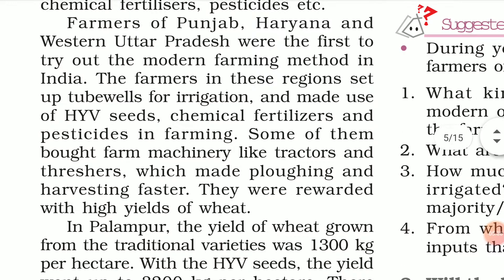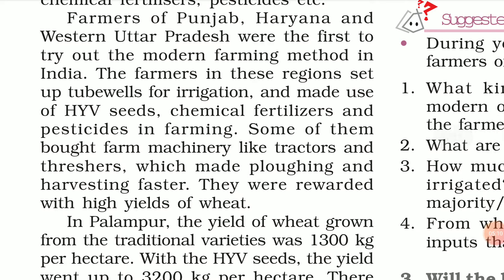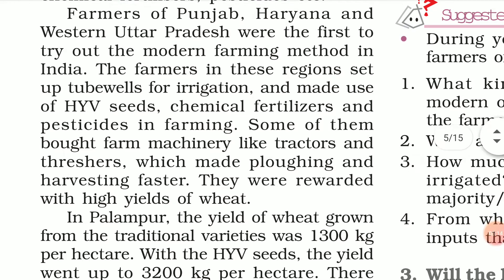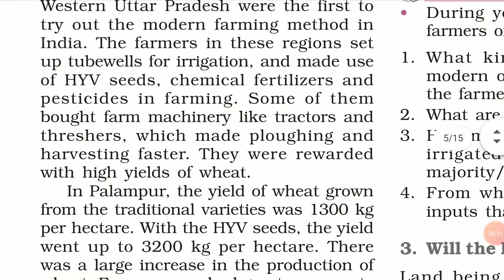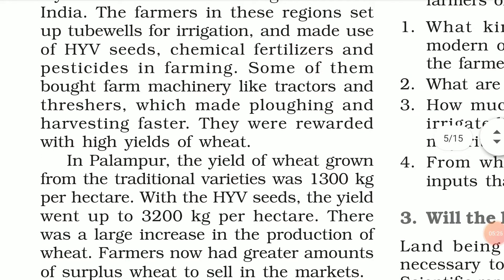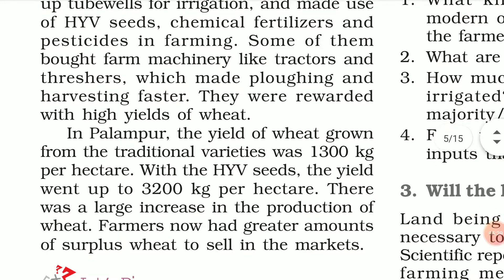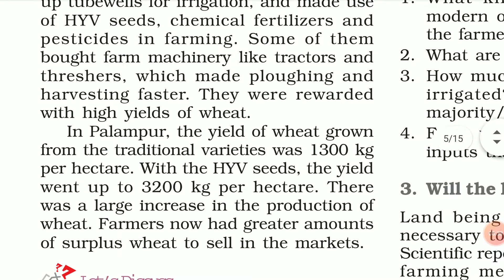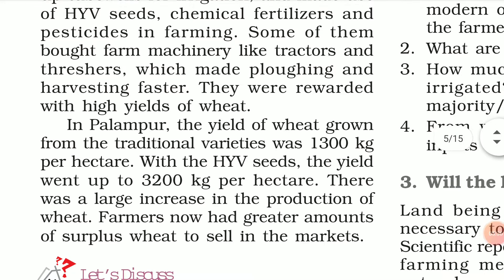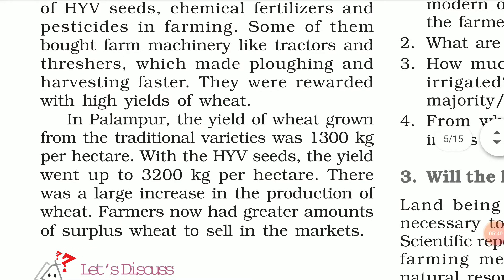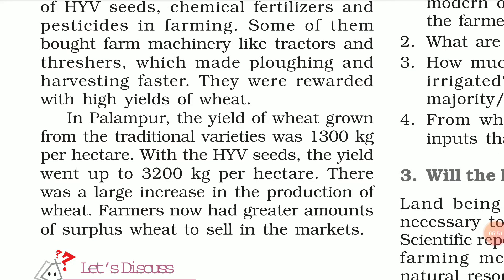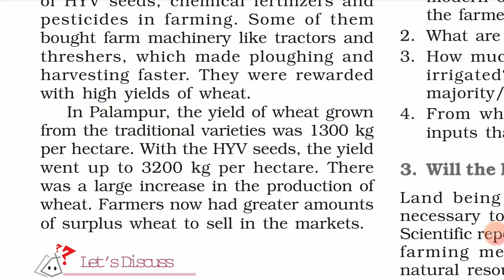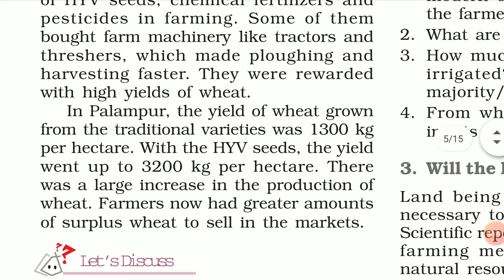Farmers in Punjab, Haryana, and Western Uttar Pradesh had very good yields compared to other parts of the country. They were the first to try the techniques of the Green Revolution. Some of them also bought farm machinery like tractors and threshers, which made ploughing and harvesting faster and more accurate, reducing wastage compared to manual methods.